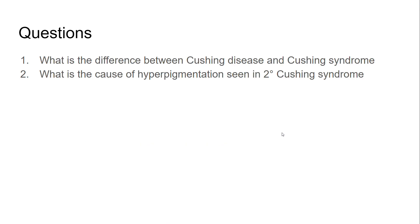Before we end, there are two questions to think about: What is the difference between Cushing disease and Cushing syndrome? And second, what is the cause of hyperpigmentation seen in secondary Cushing syndrome? Thank you everyone and have a good day.